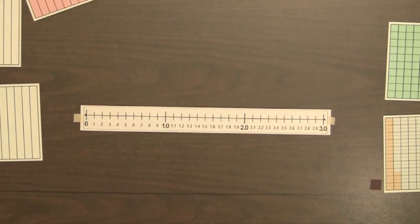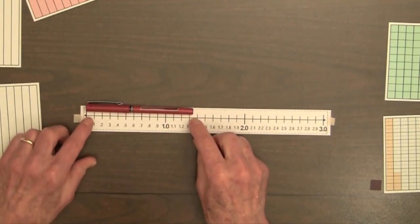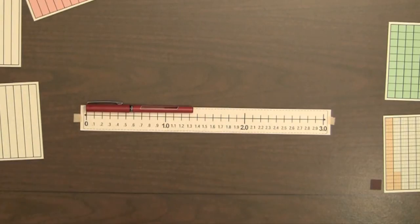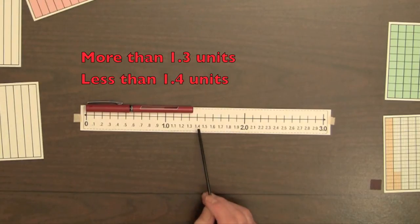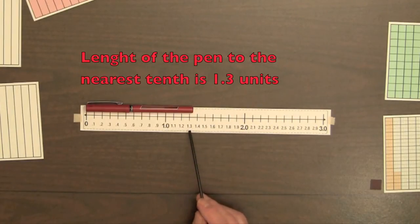Now we can measure longer objects, such as the pen we looked at a few minutes ago. Now we can see that its length is more than 1.3, less than 1.4, it is closer to 1.3 than 1.4, so in this case we will round down and say the length of the pen to the nearest tenth is 1.3 units.